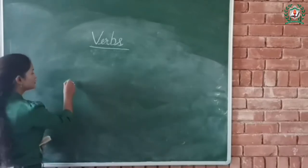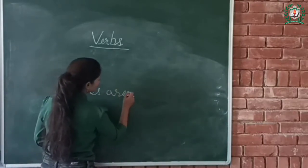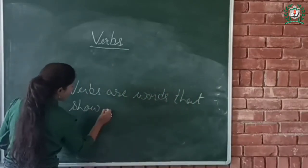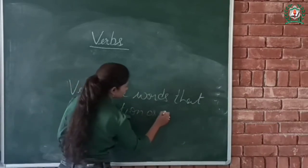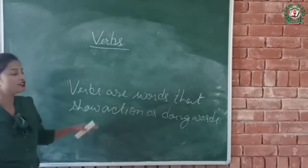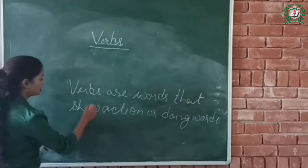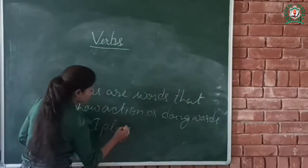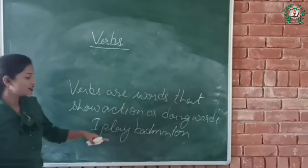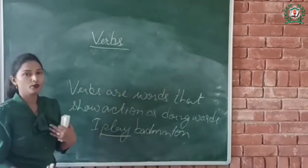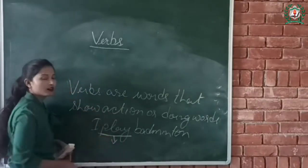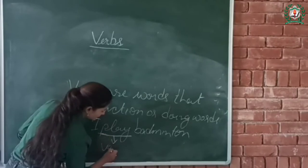What are verbs? Verbs are words that show action, or doing words. For example, I play badminton. The word 'play' tells what I do — it tells about my action. So the word 'play' is a doing word, or you can say 'play' is a verb, because it tells about my action.